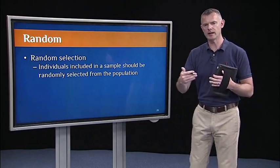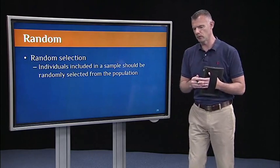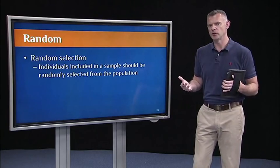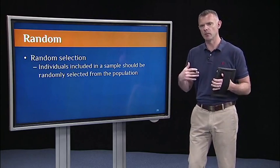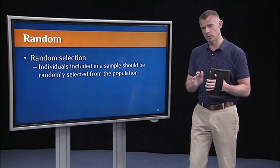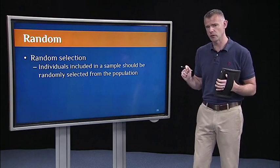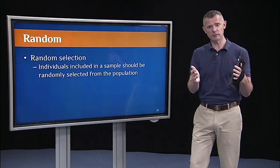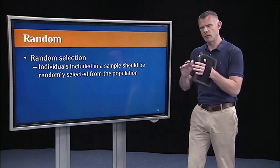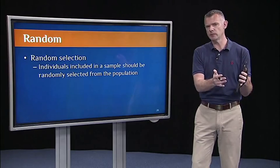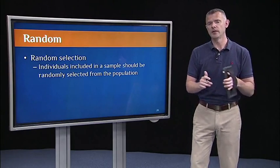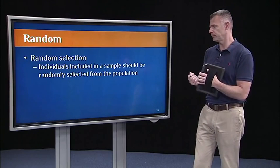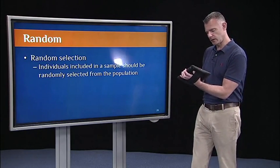In the working memory training example, if we want to make inferences about all young healthy adults, then we should get a random sample from all young healthy adults. Of course that didn't happen in the one experiment I showed you. That's the idea. We have a population, and if we want to make an inference about that population, if we want to generalize to that population, then we need to get a random sample from that population. That's random selection.